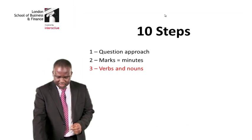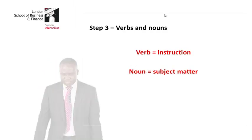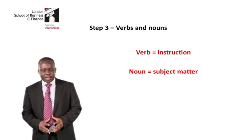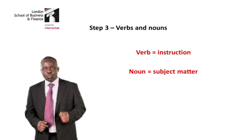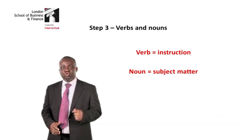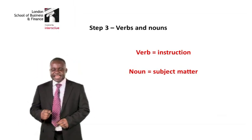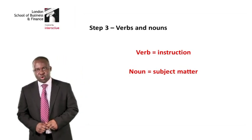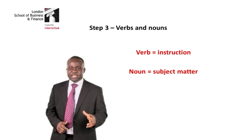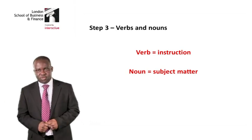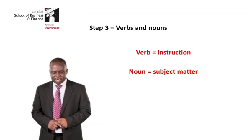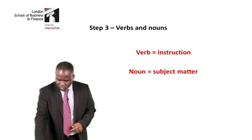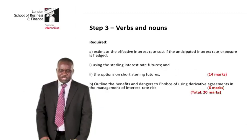So how are we going to look at the verbs and the nouns? The verb is talking about instructions — what have you been instructed to do? And the noun is talking about the subject matter — what have you been instructed to do, and on what?